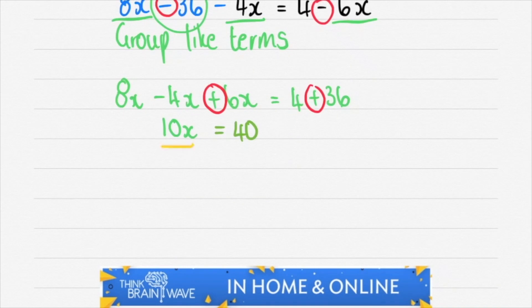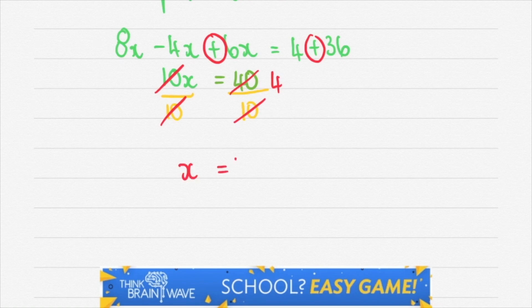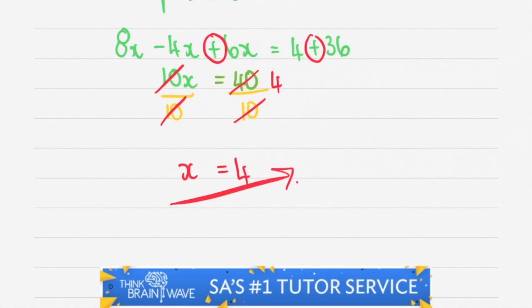You have 10x is equal to 40. 10 divided by 10 is 1 and 40 divided by 10 is 4. This gives you x is equal to 4.